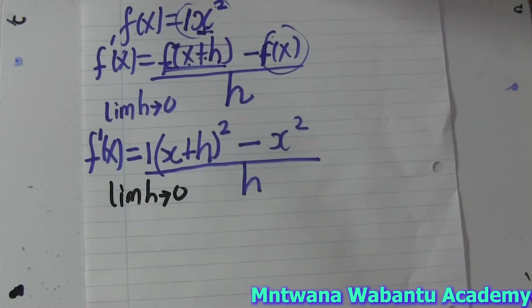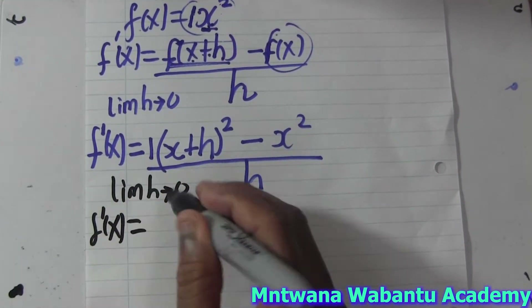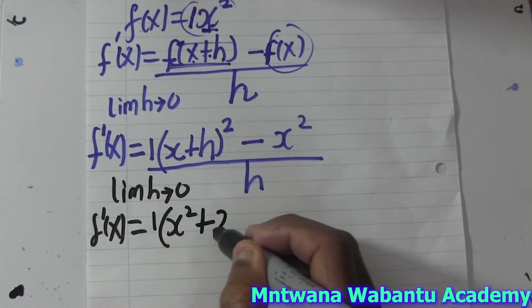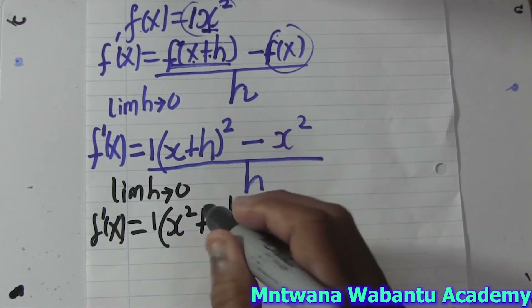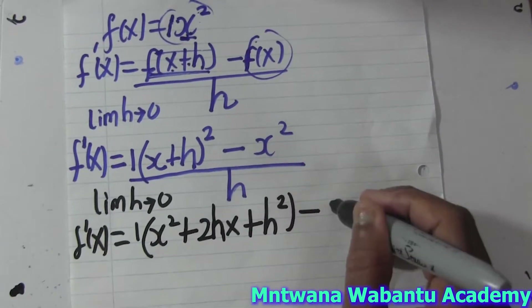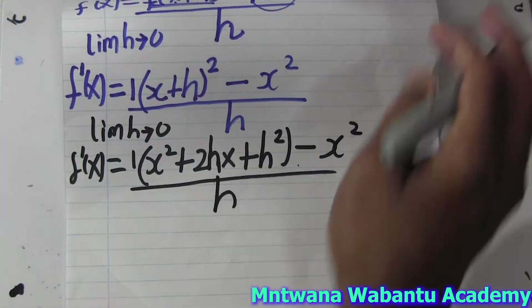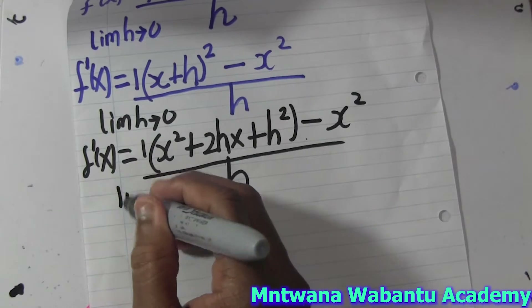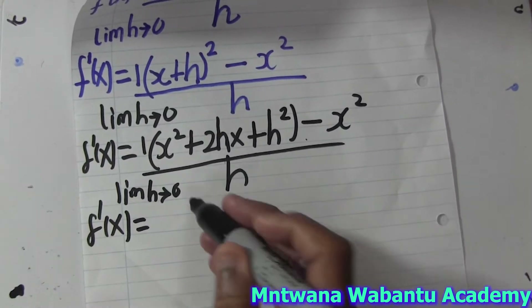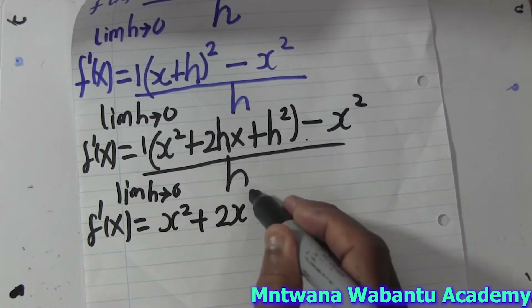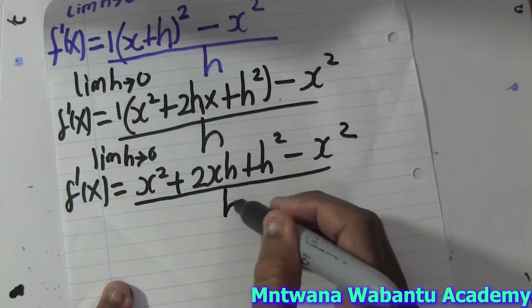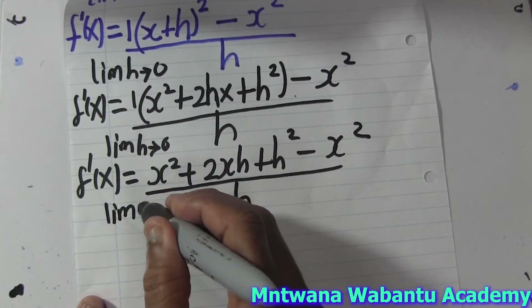So what we're going to do is just expand it. So f prime — expanding (x+h)² gives x² + 2xh + h². Then minus x², over h, and we still have our limit h approaches zero.